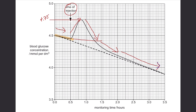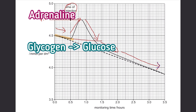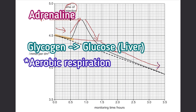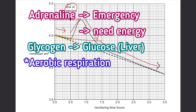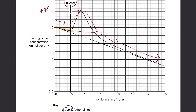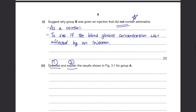Blood glucose concentration increased after the injection because due to the presence of adrenaline, glycogen was converted to glucose in the liver for aerobic respiration. When adrenaline enters your body, your body thinks there is an emergency situation and that you need much more energy — so it converts glycogen to glucose for aerobic respiration. After the adrenaline's effects wore off, blood glucose decreased either because glucose was used up at higher rates of respiration, or because insulin was secreted to bring blood glucose concentration back down as part of homeostasis.